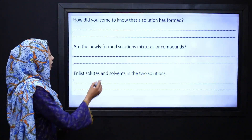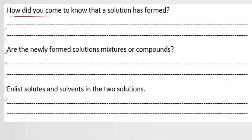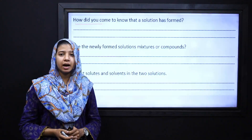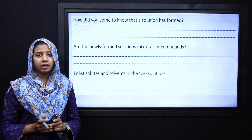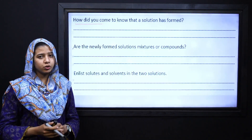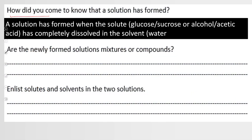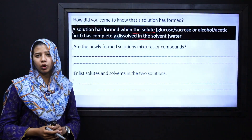The first question is: how did you come to know that a solution has formed? Very good. A solution has formed when the solute — either glucose, sucrose, alcohol, or acetic acid — is completely dissolved in the solvent, which is water. Then we have a solution completely formed.